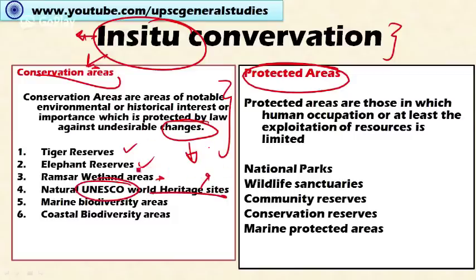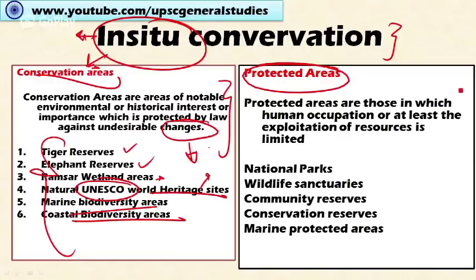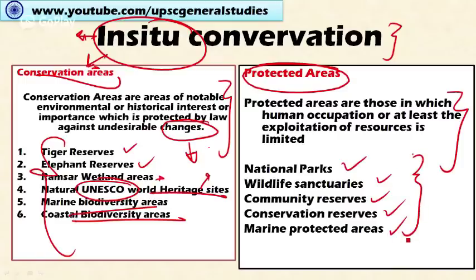Conservation areas also include marine biodiversity areas and coastal biodiversity areas. Protected areas have more stricter norms compared to conservation areas — they are areas in which human occupation and exploitation of resources are limited. These include national parks, wildlife sanctuaries, community reserves, conservation reserves, and marine protected areas, regulated by legislation by the Parliament.